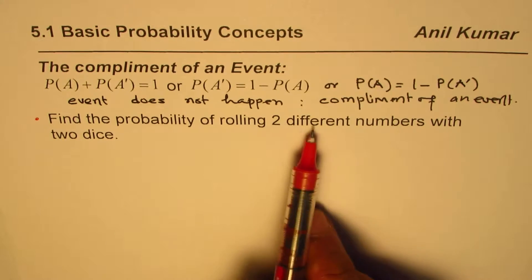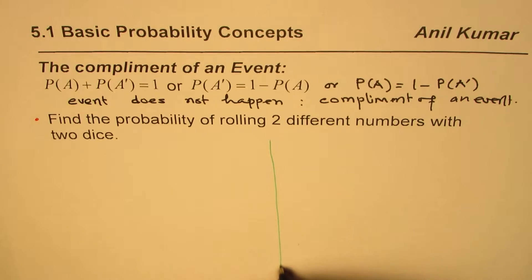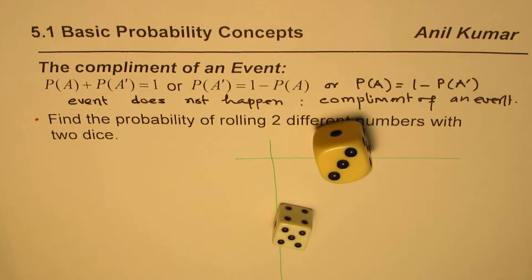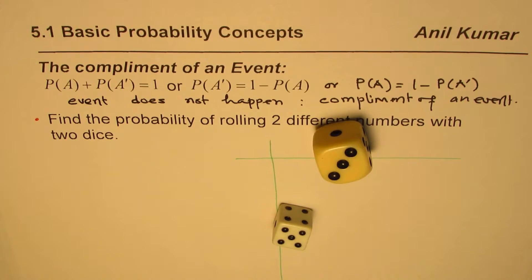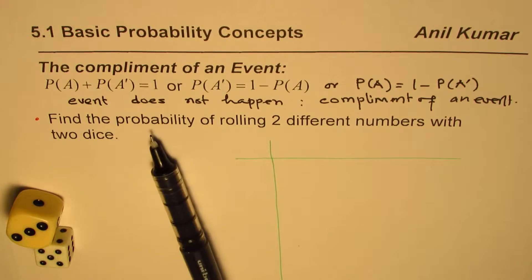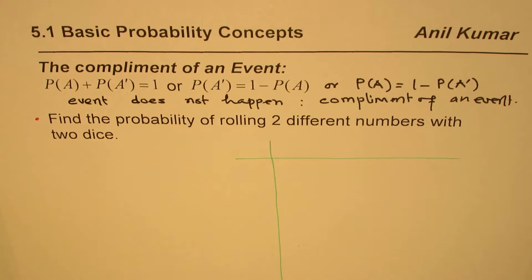Based on this concept we'll solve a question: find the probability of rolling two different numbers with two dice. Two different numbers means — if I have two dice, one big and one small, and we roll them — like here where we get five and three, those are two different numbers.